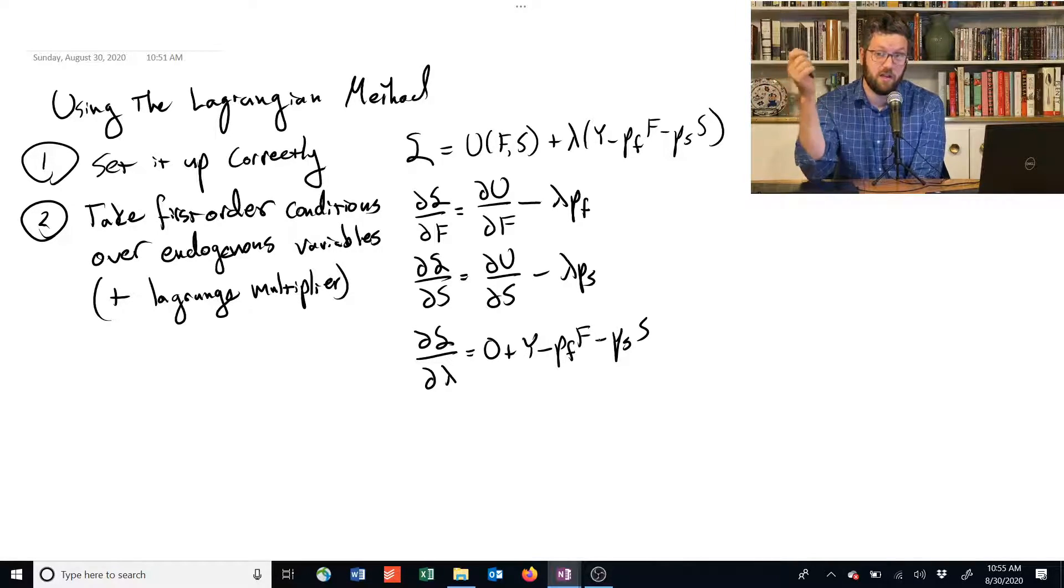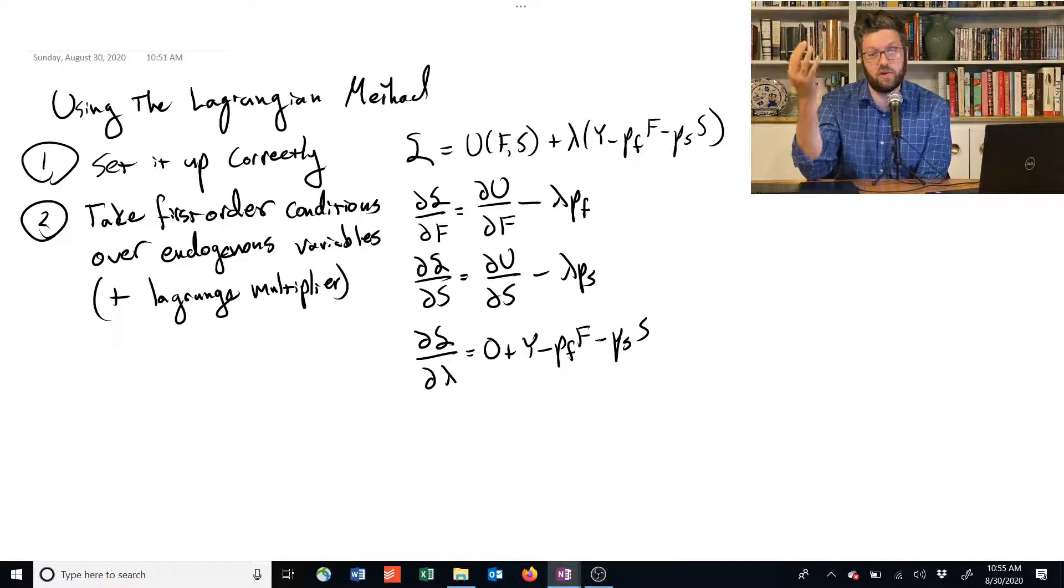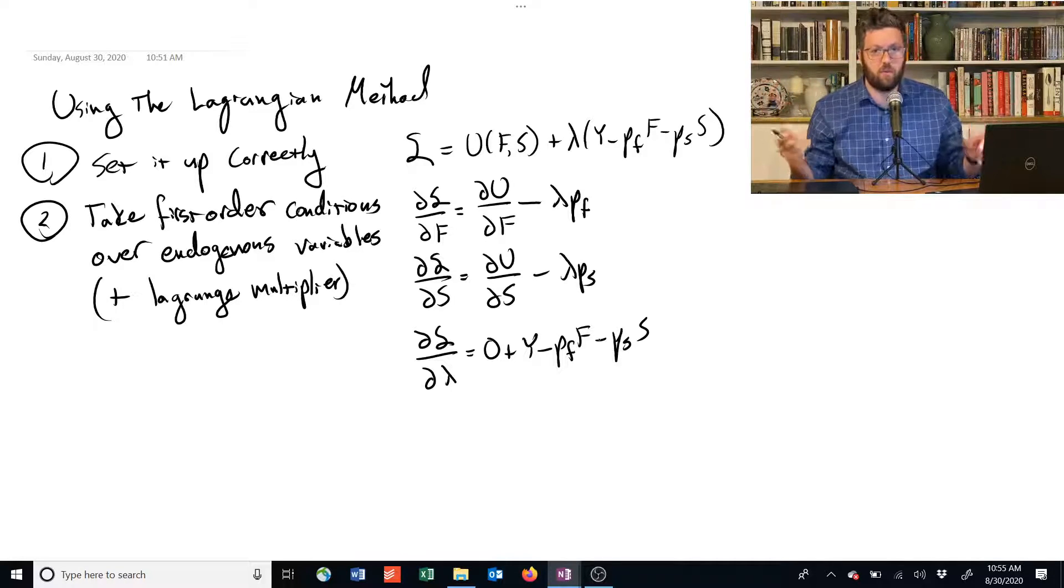Here, instead of the profit function, we set up the Lagrangian, and we take the derivative over all their choices, but then we add to it the Lagrange multiplier, which is going to end up capturing this idea that their choices are constrained and limited, and they can't just choose whatever they want.